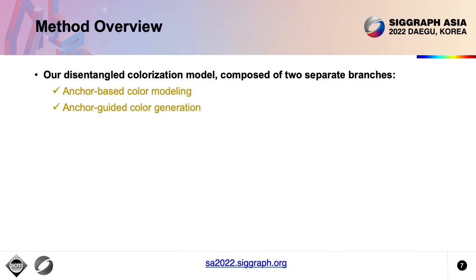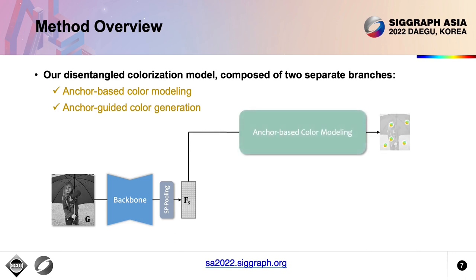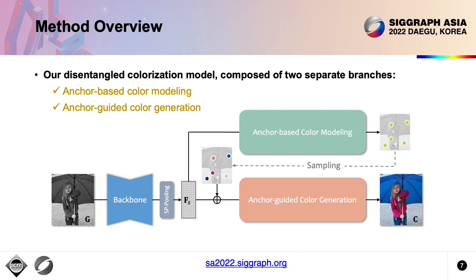We propose a disentangled colorization model composed of two separate branches: anchor-based color modeling and anchor-guided color generation. Given a grayscale input, we first extract the backbone feature tokenized through the visual pixel-based pooling. Through anchor-based color modeling, we get color anchors that represent the color distribution of the whole image in a sparse manner. By sampling colors from these anchors as hints, the anchor-guided color generation produces the final colorized result, which is free of color ambiguity.